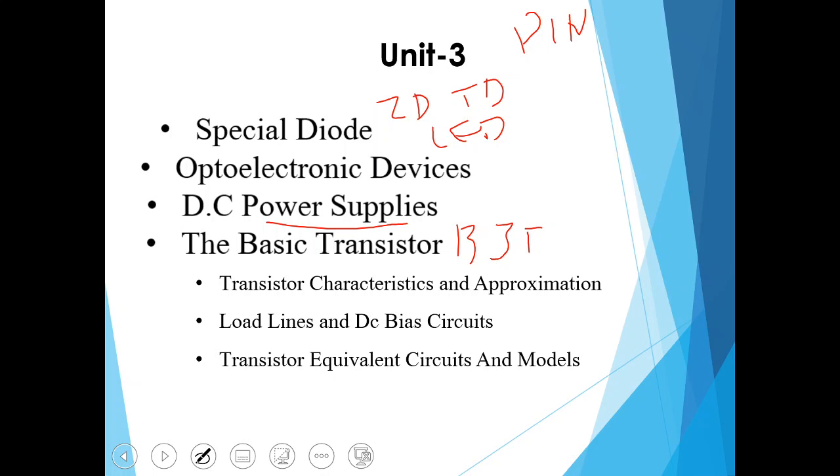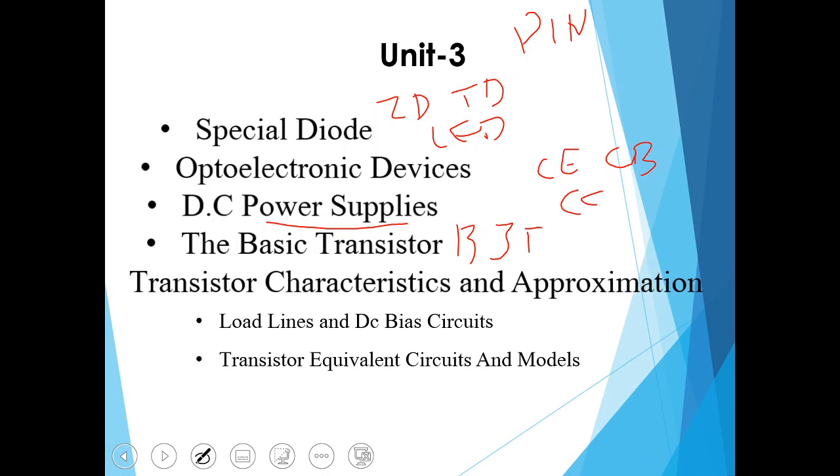Another chapter in this unit is basic transistor where we'll study about BJT bipolar junction transistor, transistor configurations like common emitter, common base, common collector, leakage current, thermal runaway. Another topic is transistor characteristics and approximation where we'll study characteristics of common base, common emitter, and common collector transistor.